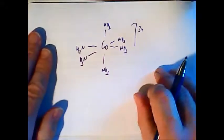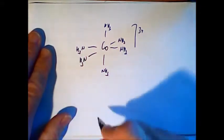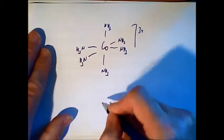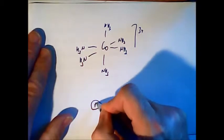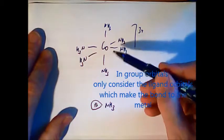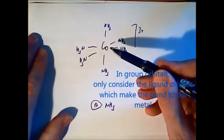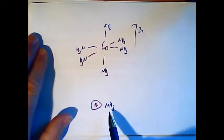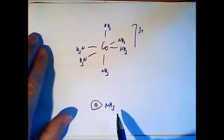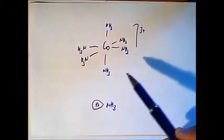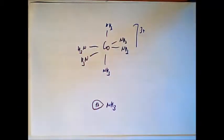Last time we talked about group orbitals already. Now what does this mean? The ammonia molecule has one lone pair electron. This lone pair electron is responsible for the bonding to the cobalt-3-plus. So we focus on this one orbital of ammonia, we don't care about the rest of the molecule of the ligand. So now we have to combine these six ligands together to six group orbitals.